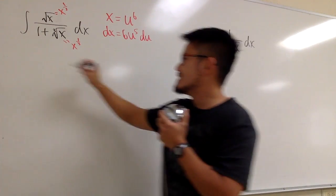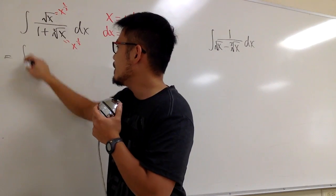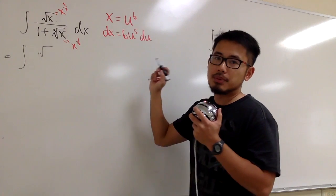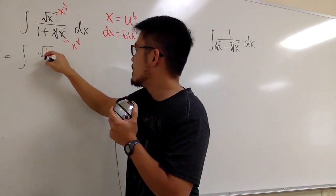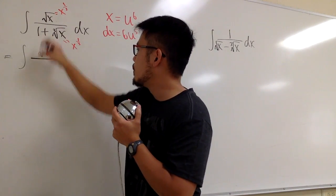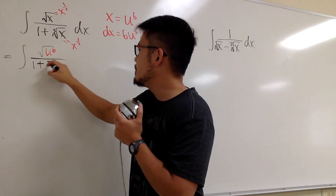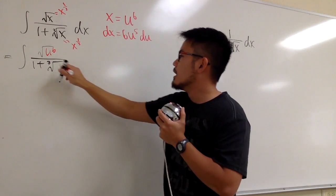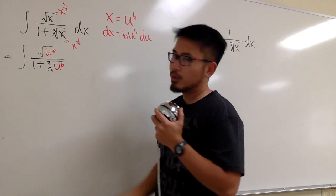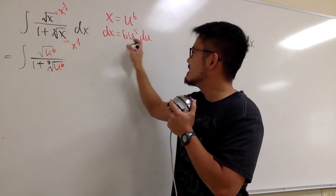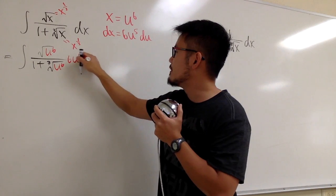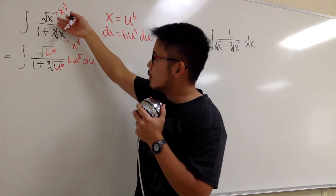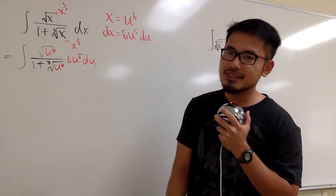We're ready. This is going to be the integral. On the top we have square root of u to the 6th power. On the bottom we have 1 plus the cube root of u to the 6th power. And then dx becomes 6u to the 5th power du. We just took this integral into the u world completely.